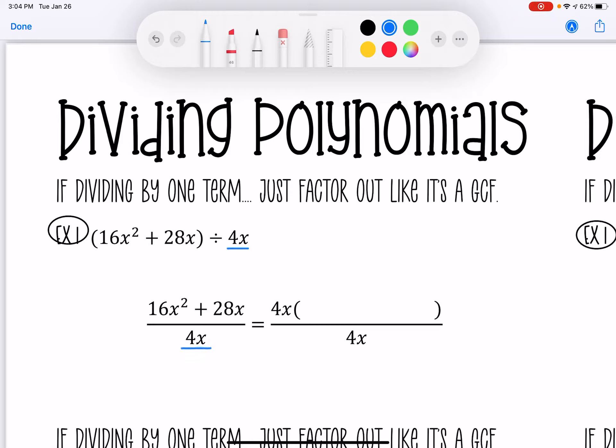So I'm saying that pull that out as if it's the GCF. I'm going to rewrite it as this binomial, which is 4x times, in order for me to get 16x squared, I'm going to have to multiply it by 4x again. And 4x times 7 is going to get me 28x. So in this blank, I get 4x plus 7.